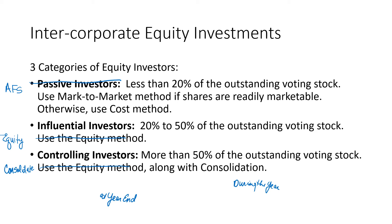If you own more than 50% of the outstanding voting stock, you're called a controlling investor. You use the equity method during the year, and then at the end of the year, you will consolidate and push all the various companies together into a consolidated financial statement.